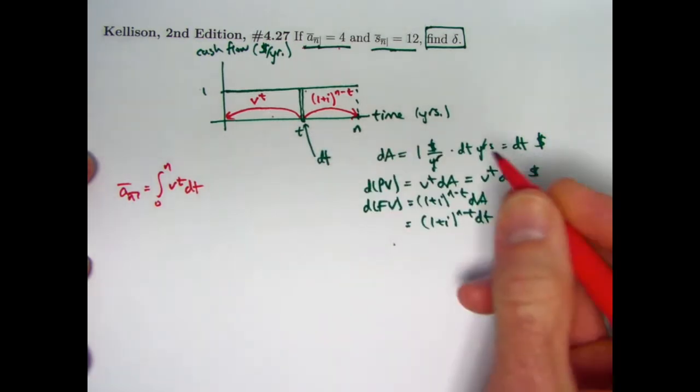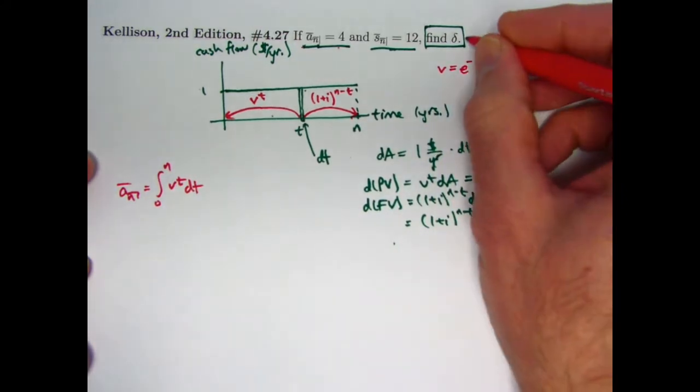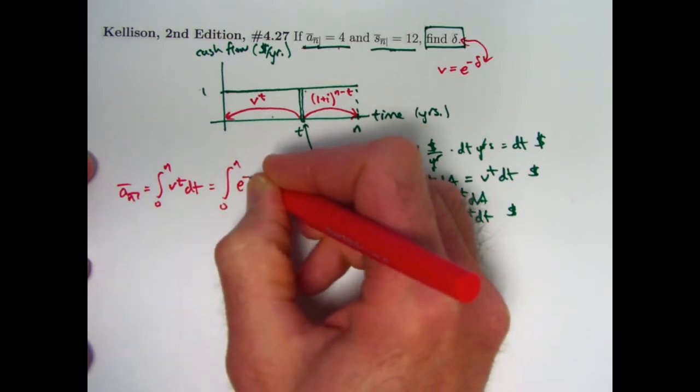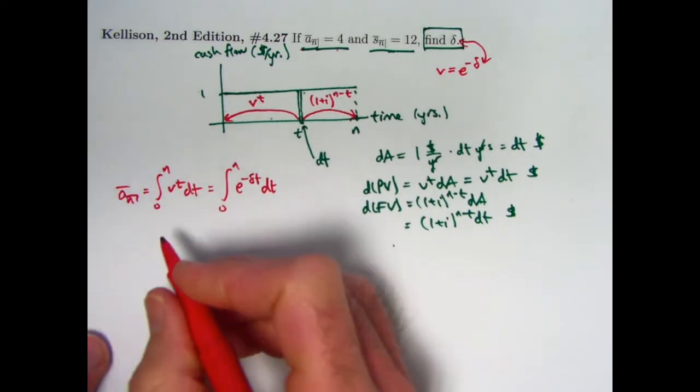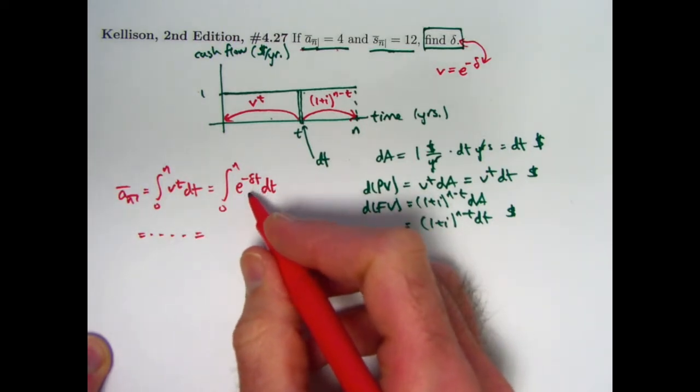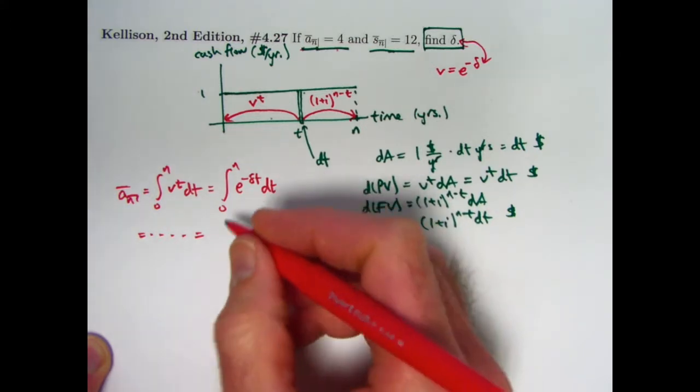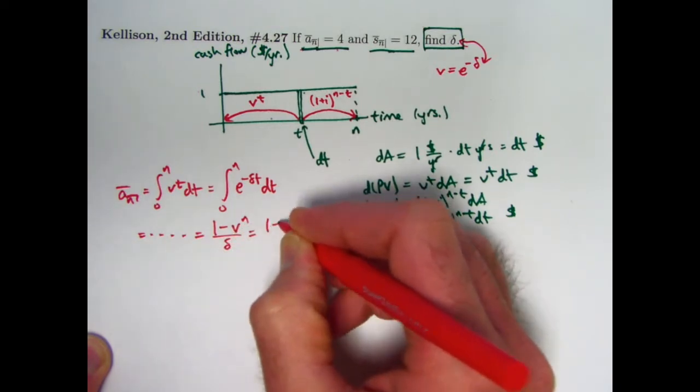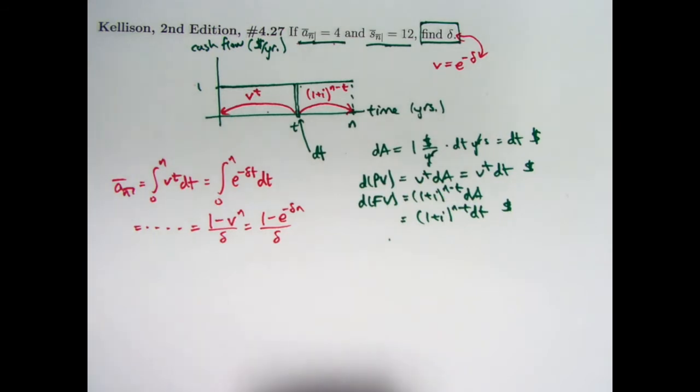You can also write that in terms of the number e. You can recall that v is e to the negative delta, where delta is the force of interest. That is the same delta as we are trying to solve for. So we can write this as the integral from 0 to n of e to the negative delta t dt. I'm also going to write an integral for the future value. I want to say I'm not going to take the time to actually do these integrals in this video. That would be a good exercise for you. You might want to do it with the e, and if you do it with the e, you might want to use a substitution like letting u equal delta times t or negative delta times t. It doesn't matter. In the end, here are the two typical ways to write the answer for the present value: 1 minus v to the n over delta, or 1 minus e to the negative delta times n over delta. Either of those is fine, and they're both correct as the present value. Again, that would be a good exercise for you to do.